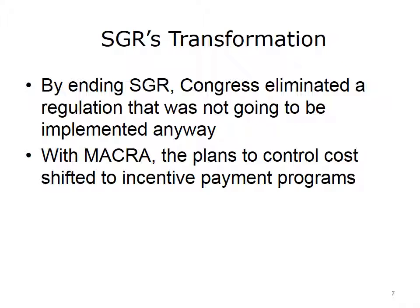The goals of SGR — of reducing the growth of the cost of care — were instead rolled into the MACRA legislation. Under MACRA, the plan for reducing health care costs takes a different approach. Instead of cutting costs across the board, MACRA implements two types of incentive payment programs aimed at reducing costs: the first is called Merit-Based Incentive System, or MIPS, and the other is called Alternative Payment Models, or APMs.